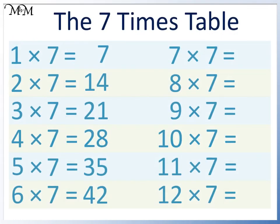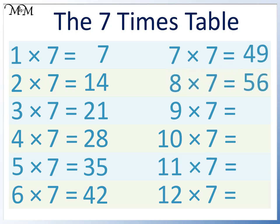We will now learn the second half of the 7 times table. 7 times 7 is 7 more than 42, so 7 times 7 equals 49. 8 times 7 equals 56. We can remember this one because the question and answer involves 5, 6, 7, 8. 9 times 7 equals 63. We can remember this because 6 plus 3 equals 9.